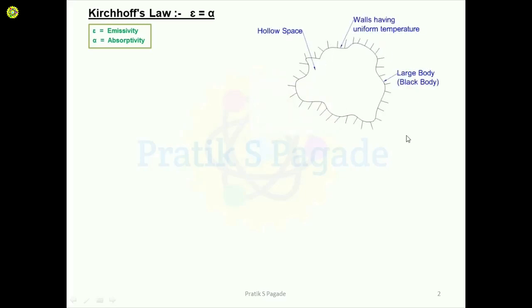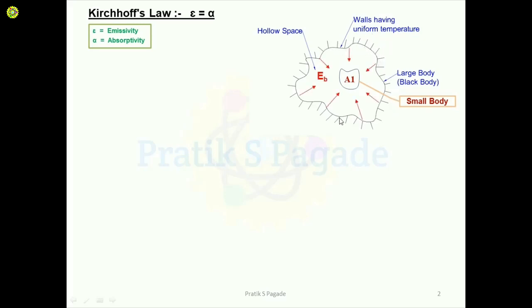Suppose this is a large body having the properties of a black body. This large body has a hollow space inside, and the walls of this body have uniform temperature. Inside this large body we have kept a small body having area A1. Due to the temperature of this large body, it emits radiations onto this small body. The emitted radiations are given by eb, which is the emissive power of the black body.